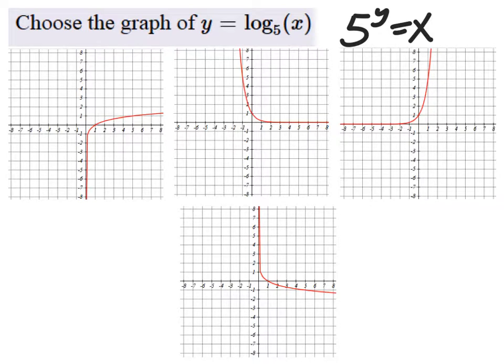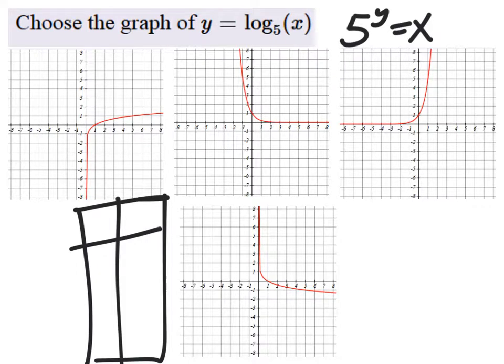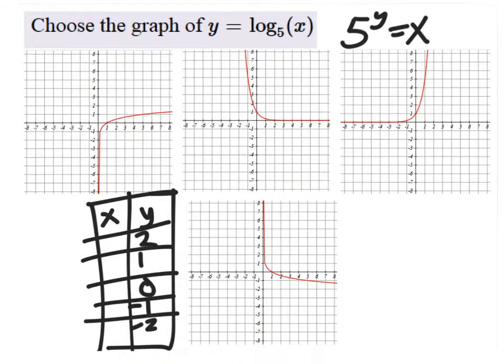Well, what does that give us? So let's make our table. And we are choosing values of y on this because it's the exponent for the 5. And this should be what it plays out at.